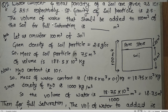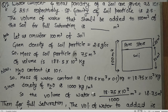The initial water content is 10%, so the mass of water present is 0.1 × 187.5 × 10³ = 18.75 × 10³ kg. Since the density of water is 1000 kg per meter cube, the existing volume of water is mass divided by density, which equals 18.75 meter cube.